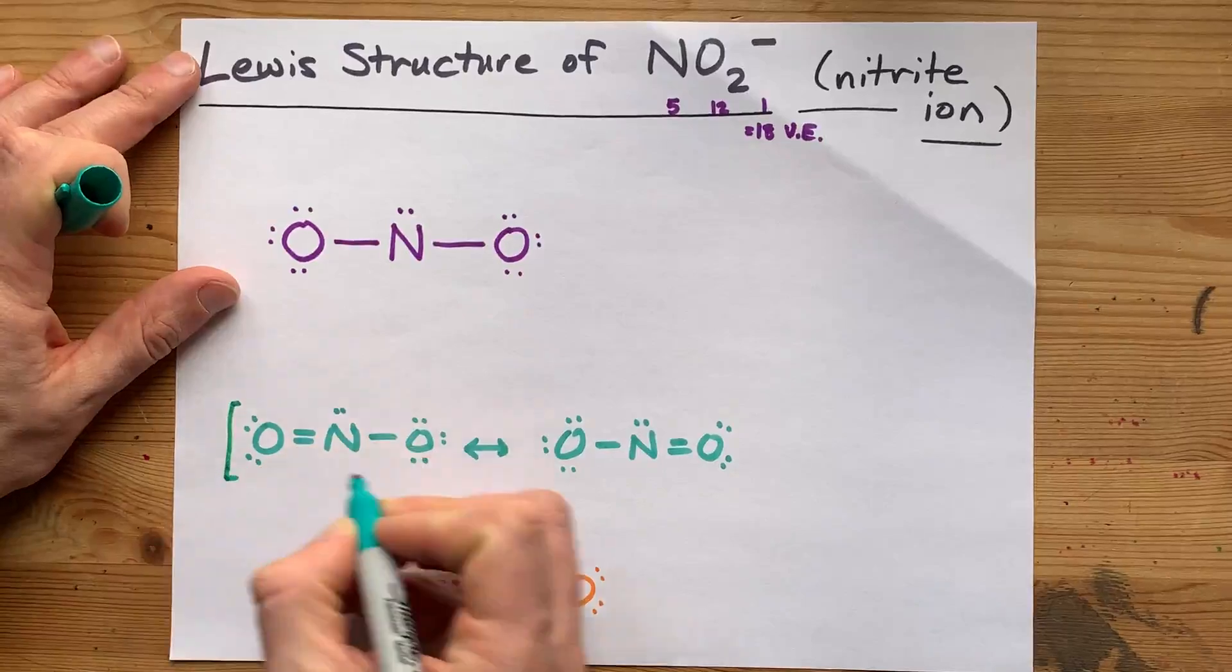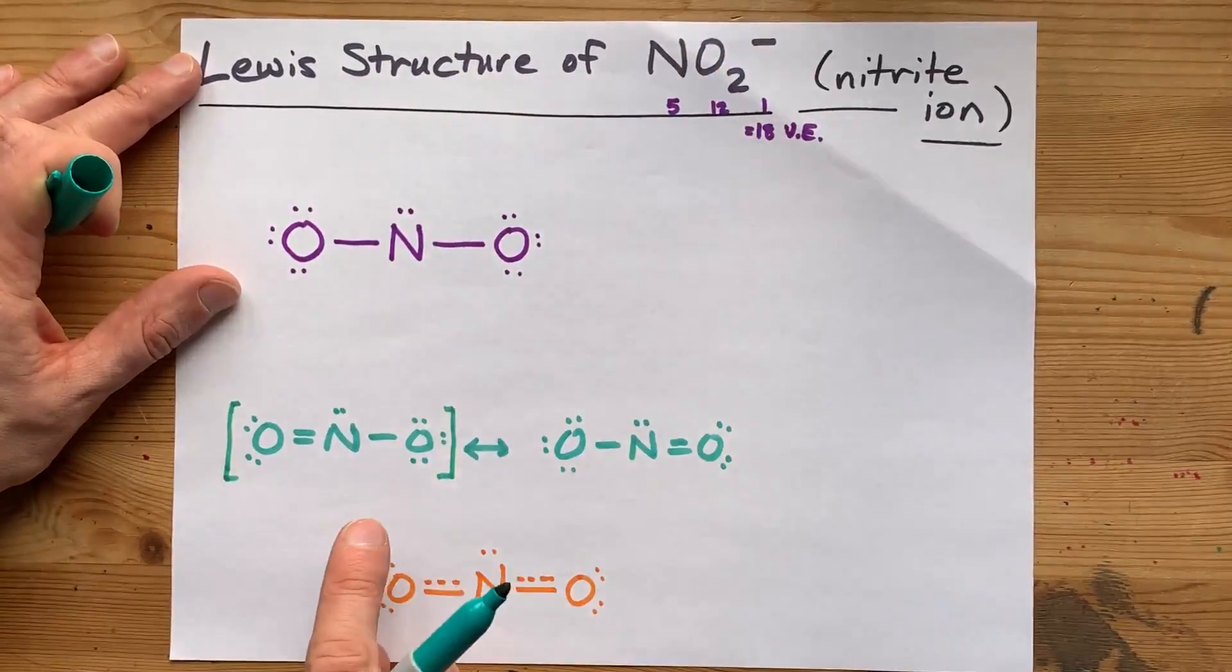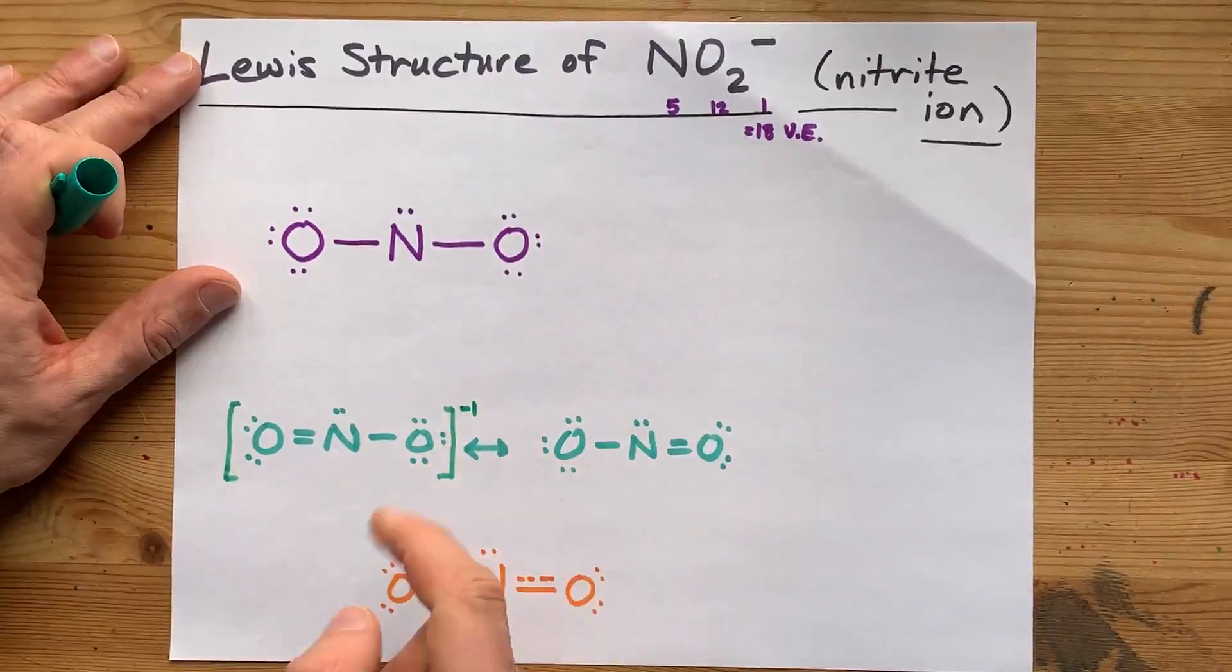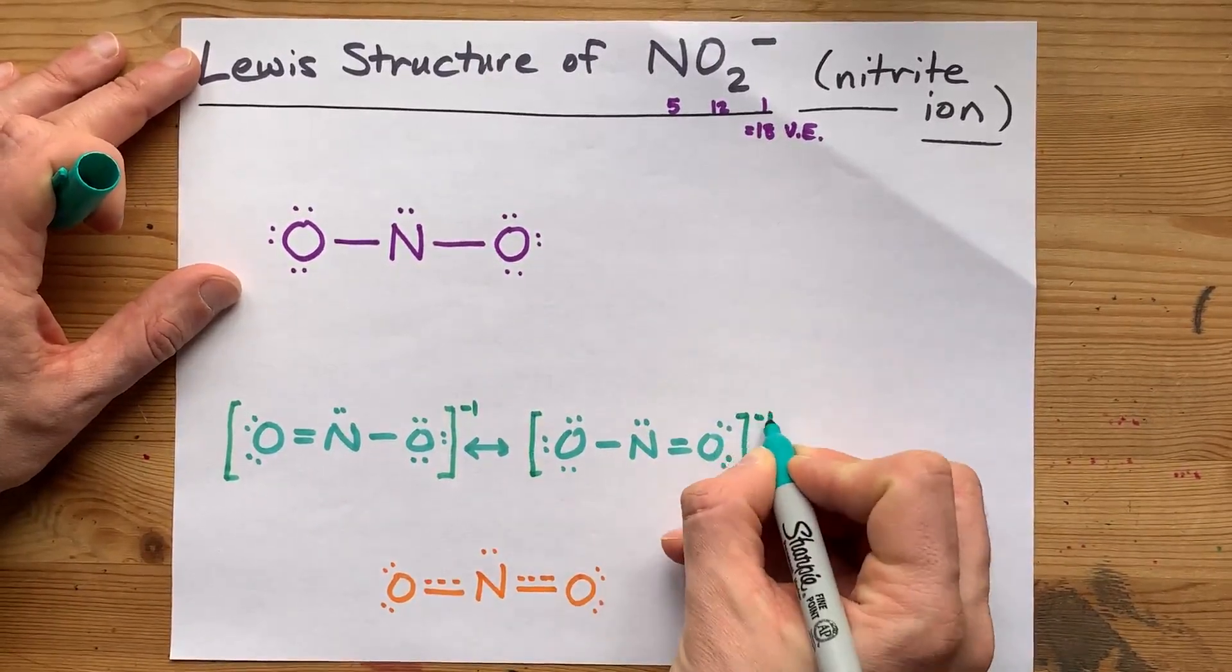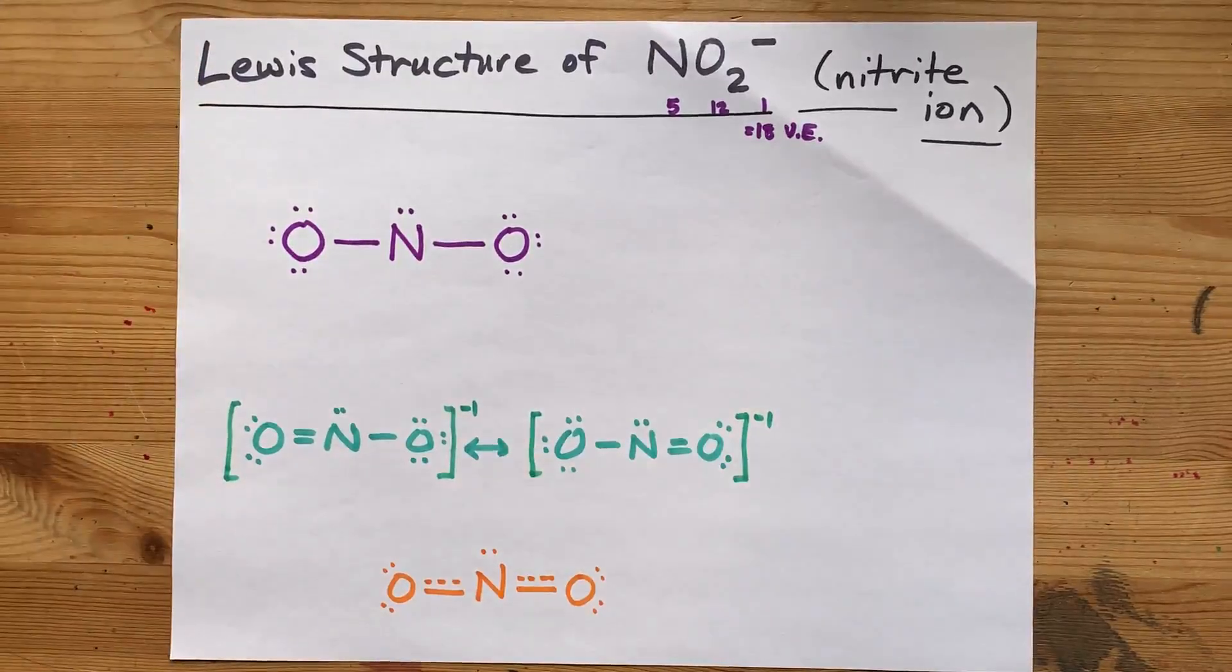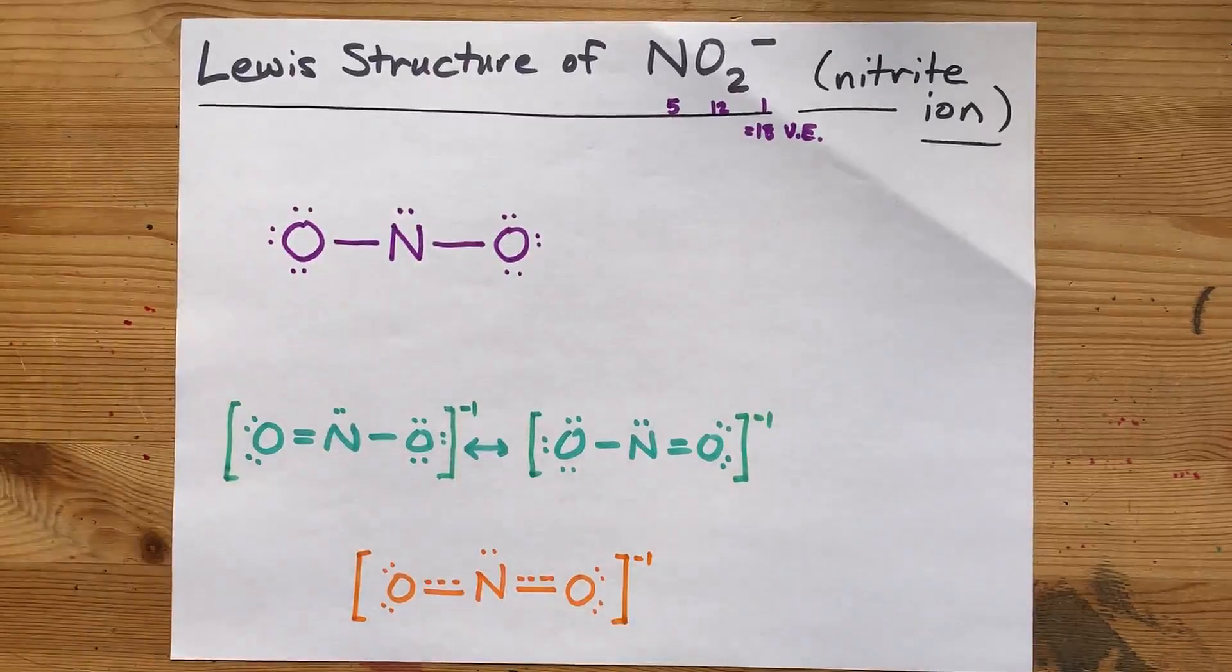Now, there's one more thing I've got to do here. Because these are Lewis structures for charged particles, I have to put it in square brackets with a minus one charge. I'm going to do that here and here, because both of those do have that charge. And I'm going to do it on my resonance hybrid, just to be extra clear.